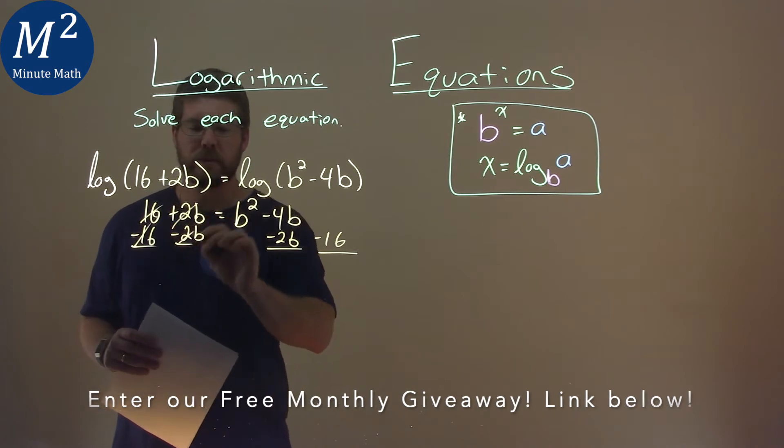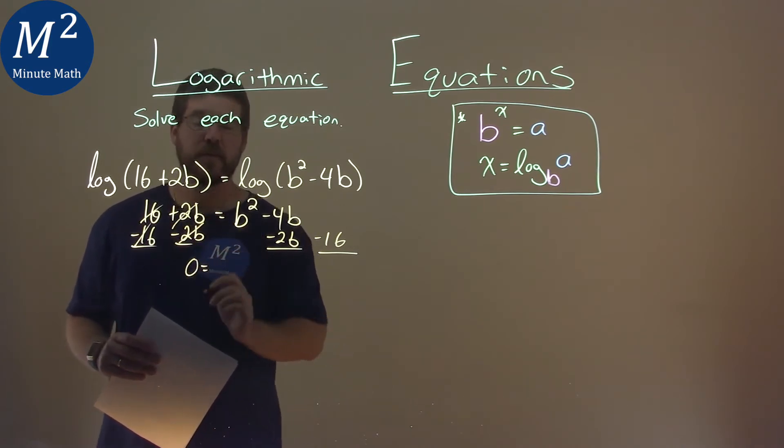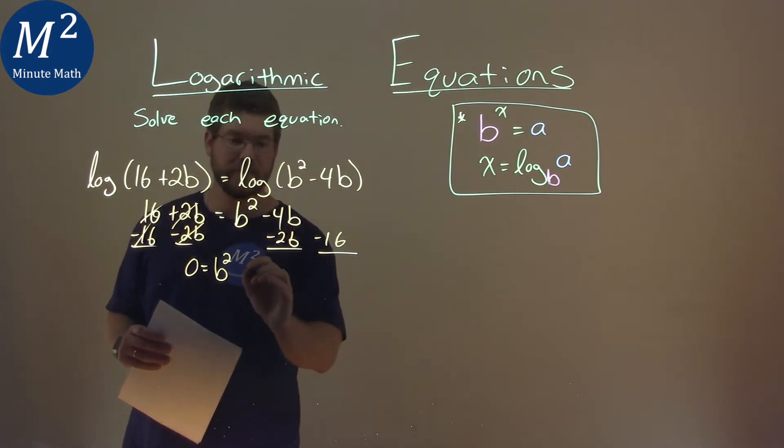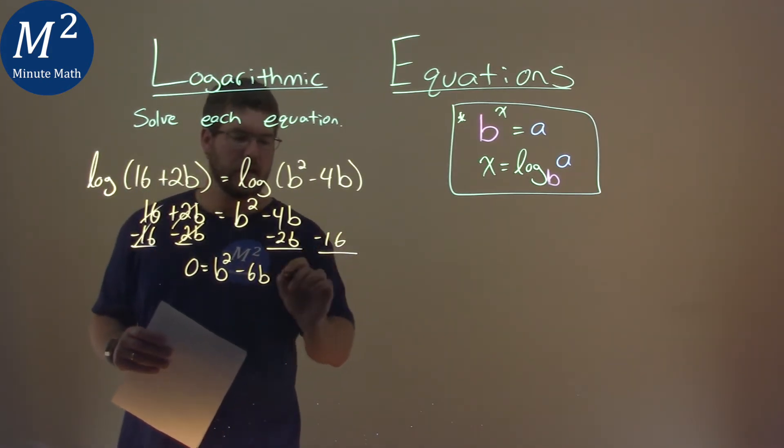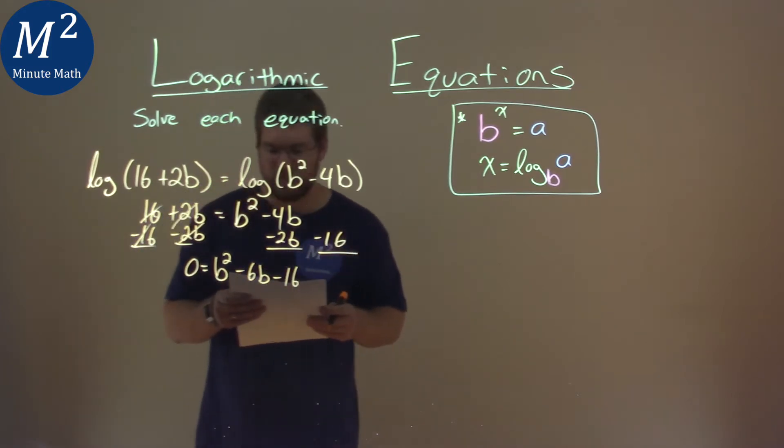16s cancel, and the 2b's cancel here, leaving us equal to 0. b squared comes down, and negative 4b minus 2b, that's negative 6b, and minus 16 comes down right here.